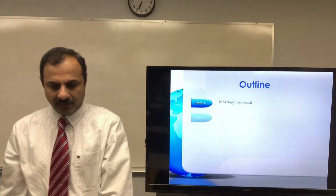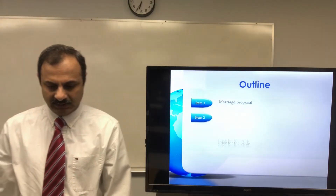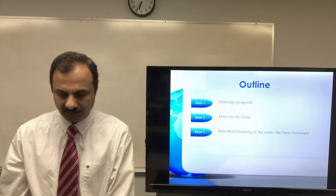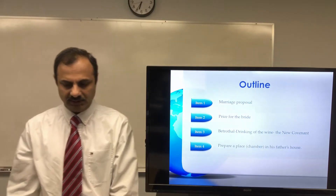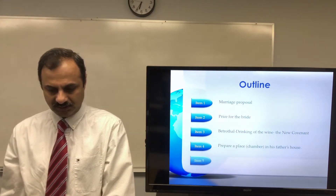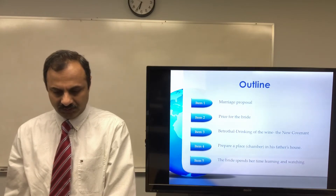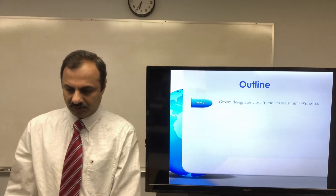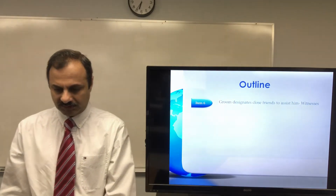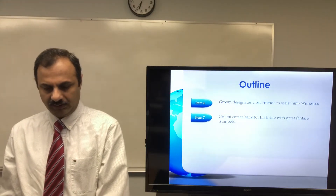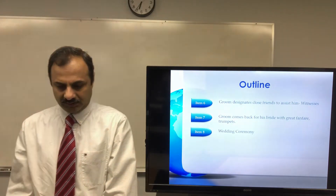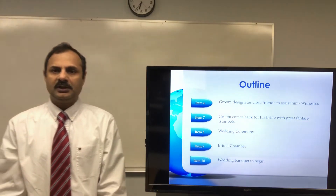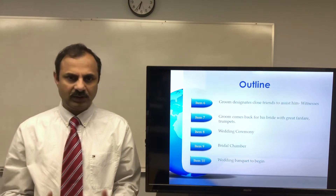The outline for this class is: what a marriage proposal looks like, what is the price of the bride, the betrothal and drinking of the wine marking the new covenant, preparing a place in the Father's house, how the bride spends her time watching, the groom designating close friends as witnesses, the groom coming back with great fanfare and trumpets, and finally the wedding ceremony, bridal chamber, and wedding banquet.